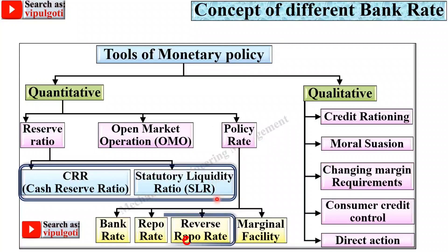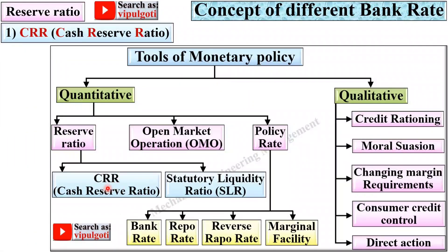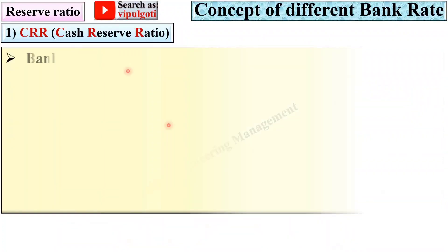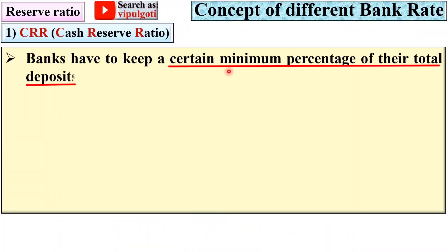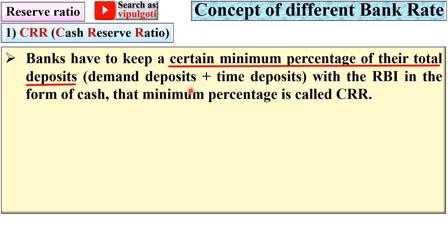Our focus is on these five different terms: CRR, SLR, bank rate, repo rate, and reverse repo rate. Let's start with CRR — Cash Reserve Ratio. Banks have to keep a certain minimum percentage of their total deposits, that is demand deposits plus time deposits, with the RBI in the form of cash. That minimum percentage is called CRR.